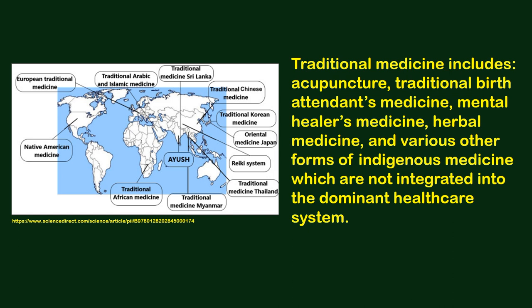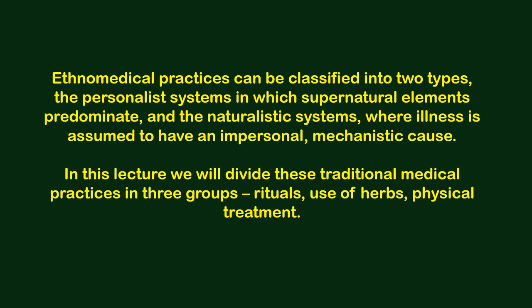Traditional medicine includes acupuncture, traditional herbal medicine, mental healers, herbal medicine, and various other forms of indigenous medicine which are not integrated into the dominant healthcare system. Ethnomedicine practices can be classified into two types: the personalist systems, in which supernatural elements predominate, and the naturalistic systems, where illness is assumed to have an impersonal mechanistic cause. In this lecture we will divide these traditional medical practices into three groups: rituals, use of herbs, and physical treatment.